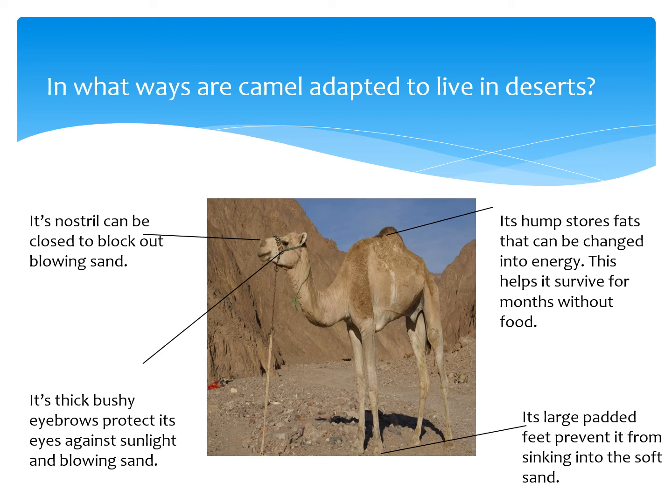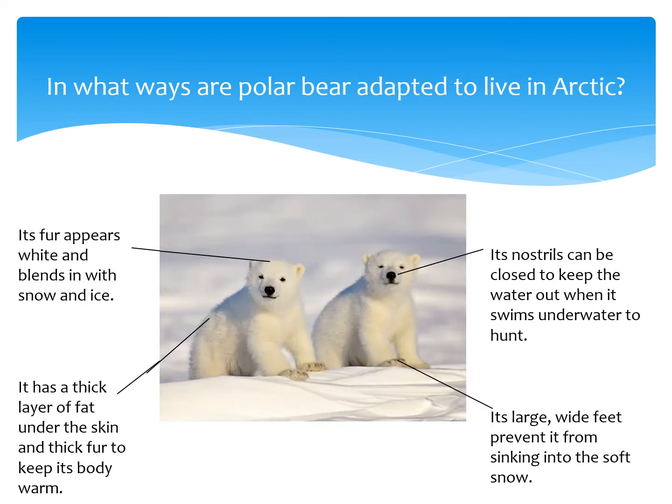In the desert there is very little water and food. When camels find water, they drink a lot at one time and can survive on that amount for weeks. Camels perspire very little, so they do not lose water from their bodies too quickly. The next example is: in what ways are polar bears adapted to live in the arctic?